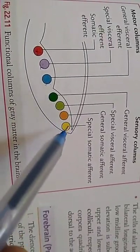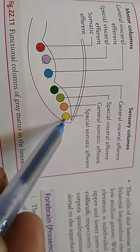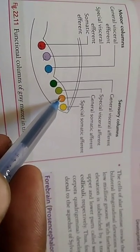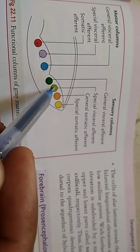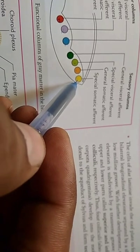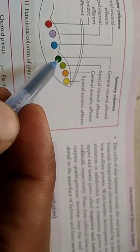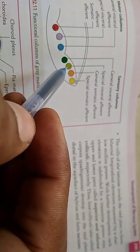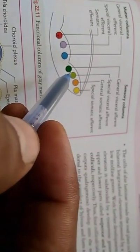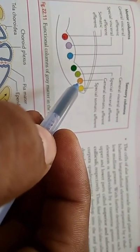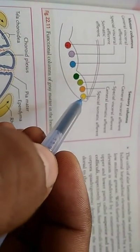The cells of alar lamina differentiate into sensory neurons which are arranged into four longitudinal columns. Among these four longitudinal columns, two are visceral and two are somatic. The two visceral columns are the general and special visceral afferent columns, and the two somatic columns are the general and special somatic afferent columns. The general visceral afferent column receives sensation from the viscera and is connected with organic reflexes. The special visceral afferent column receives sensations from the tongue and palate. The general somatic afferent column receives exteroceptive sensations from the face, scalp, and external ear, whereas the special somatic afferent column is concerned with the sense of hearing and balance.